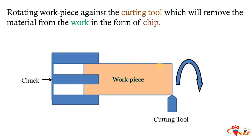The chip is formed and we get the desired dimensional accuracy and shape. As that chip is forming, we are getting the desired surface finish and dimensional accuracy. On the rotating work piece, we apply the cutting tool, which moves in the feed direction and removes the material in the form of chip to get the desired shape.